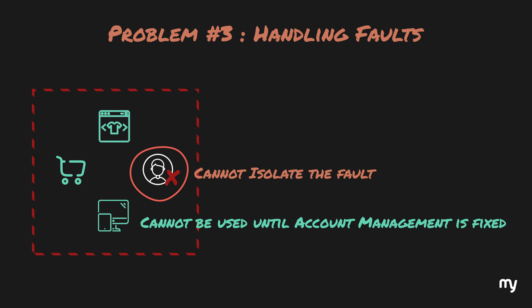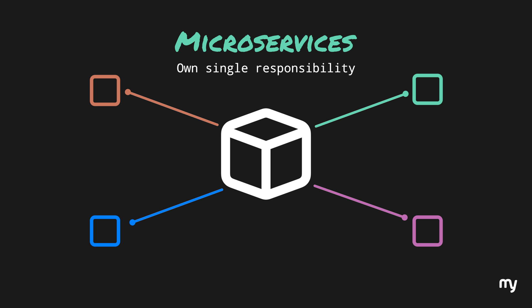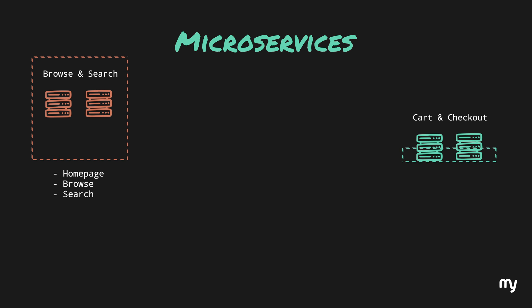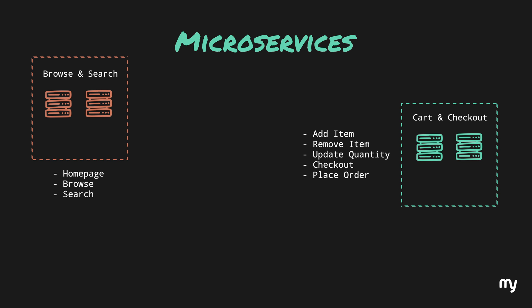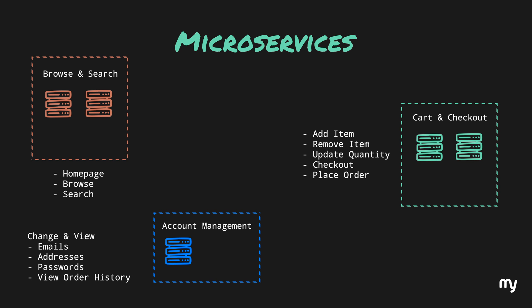As you can see, a large monolith brings a lot of problems with it, and to solve these problems microservices came into the picture. Microservices came with the idea of dividing the whole big application into logically separate modules, each owning a single responsibility. For those who have been in software engineering for quite a bit of time, you can consider microservice architecture as a flavor of service-oriented architecture. When we roughly split this e-commerce monolith into microservices, we can have browse and search as one service, cart and checkout as another, and account management as a third service handling things like emails, passwords, and order history.